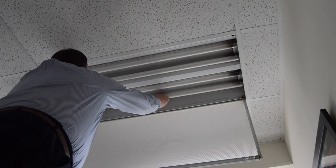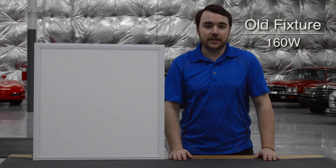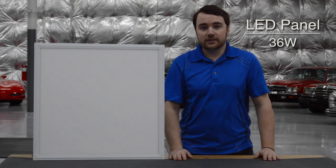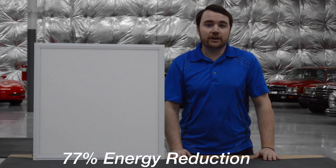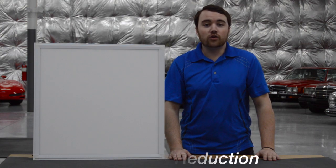If you replace a 4-tube fluorescent fixture with a 2x2 panel light, you reduce the wattage from 160 down to only 36 watts. That's a 77% energy reduction per fixture, an enormous savings when you multiply this by the number of fixtures in your office.